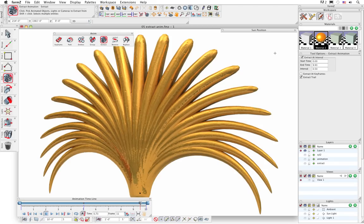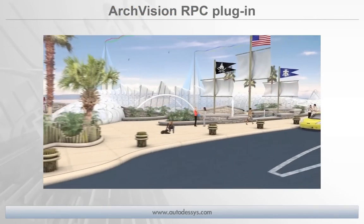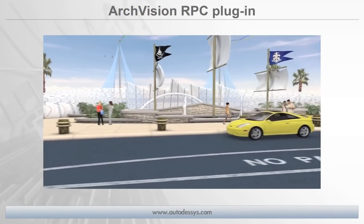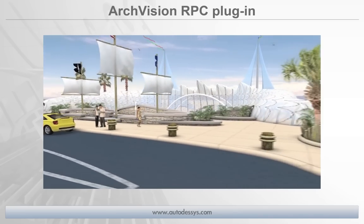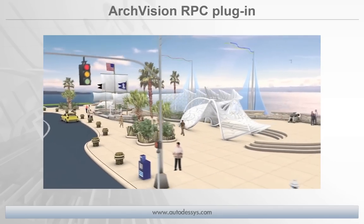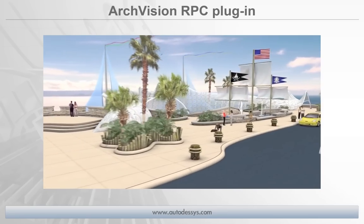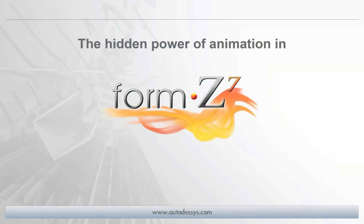That's just another fun way that we can use the animation capabilities within Form Z for creating 3D form. Before I end this presentation, I would like to quickly mention that Form Z supports the ArchVision RPC plugin, which is a great resource for easily adding static and animated entourage items to your scene, such as trees, people, cars, moving water fountains, and walking people. The RPC content libraries literally contain tens of thousands of items that you can just drag and drop into your scene. And this concludes the Form Z7 animation presentation.